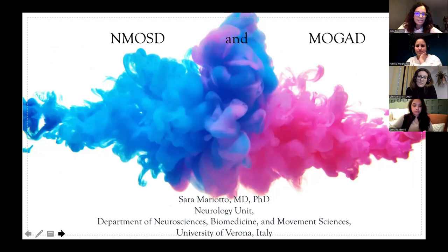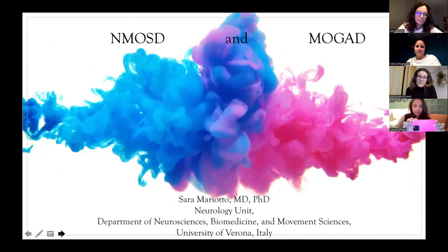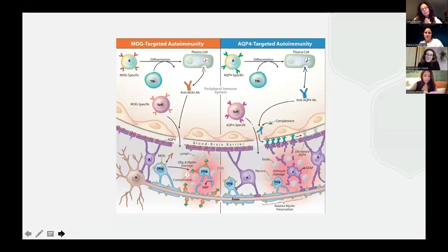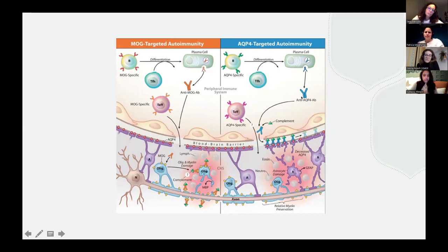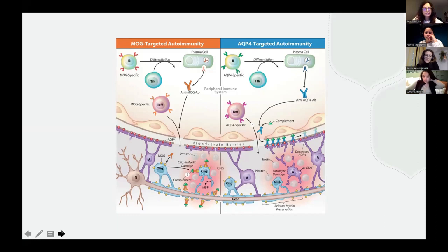The main point with MOGAD and NMOSD is the presence of the antibody. In the case of MOGAD, the antibody targets MOG, which is on myelin oligodendrocyte. In the case of NMOSD, it's usually, although not always, aquaporin-4, which targets the astrocyte. This is the main difference with multiple sclerosis, where we do not have a specific antibody which identifies the disease.